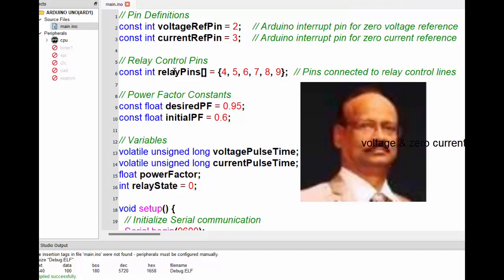For the source code, as far as the program is concerned, it is the Arduino program where the voltage reference and current reference pins are taken like this. Relay connections are at pin 4, 5, 6, 7, 8, 9. The desired power factor is 0.95 and the initial power factor is 0.6. The other variables are done as per the program. Once it is compiled you get the circuit working. The source code will be available, the hex code for this program will be available free of cost once you send a request by subscribing, sharing and pressing the bell icon. Only after these three confirmations, the hex code will be given so that you can see it yourself if you have access to Proteus.